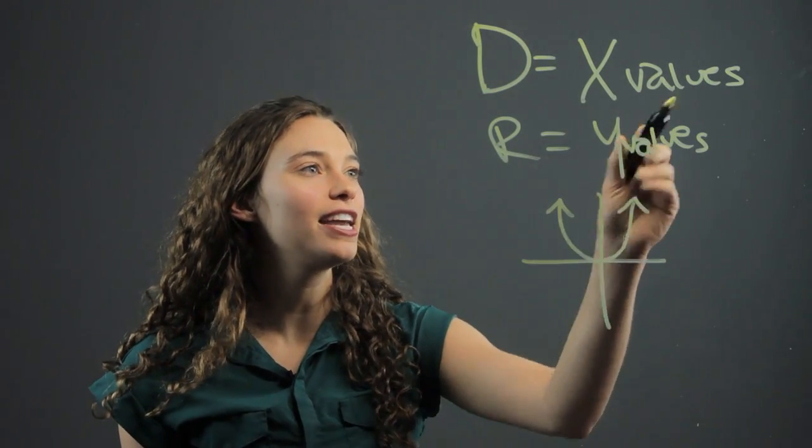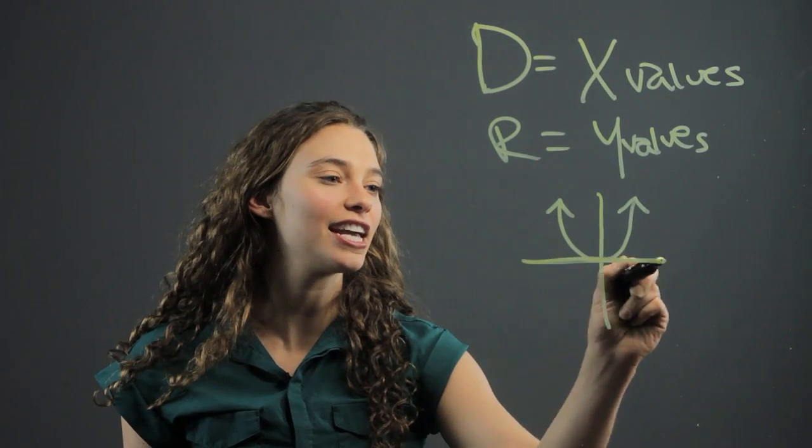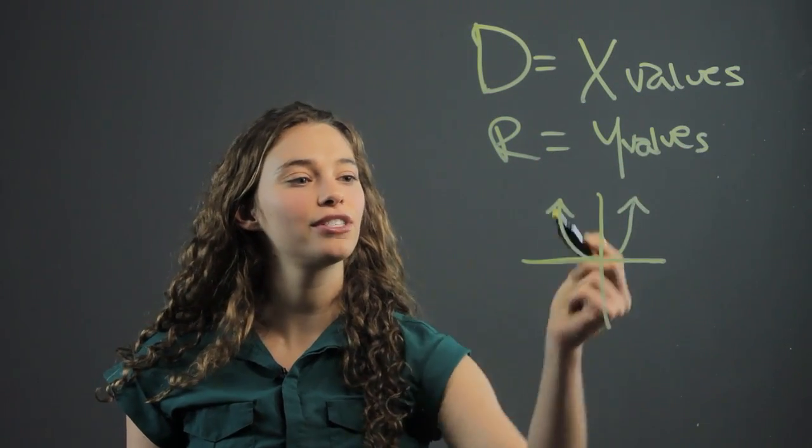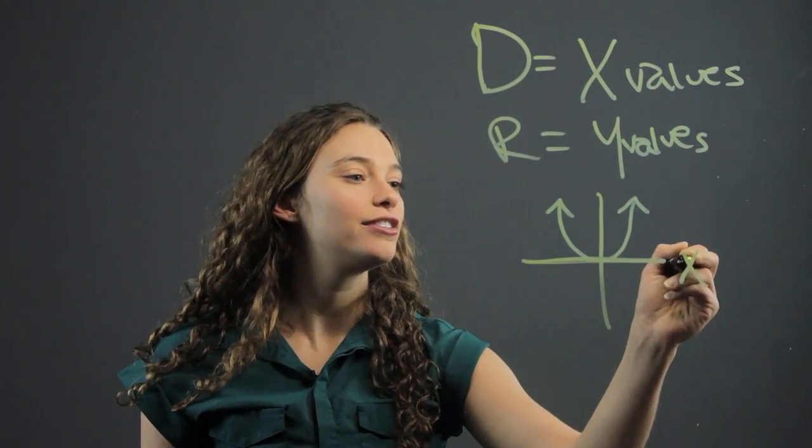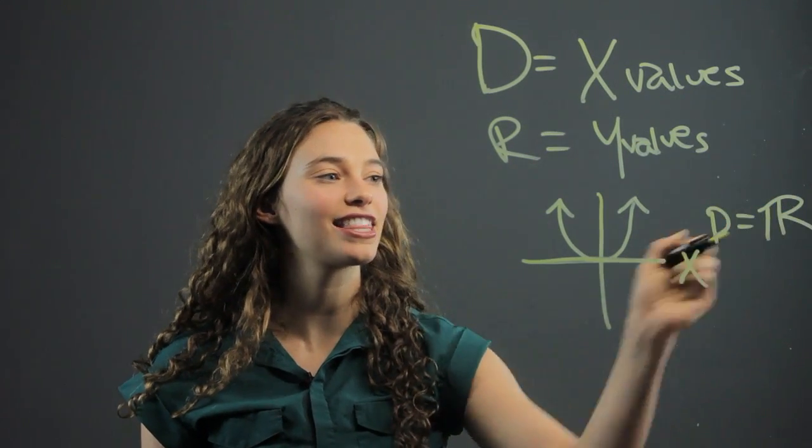So, the domain of this is going to be all possible x values. In this case, it can be any number. It's going to go on forever in both directions of the x values. So, the domain is going to be all real numbers, which we write like that.